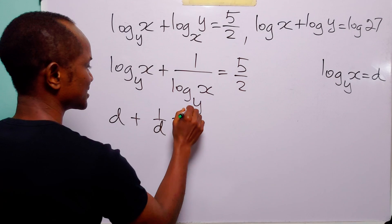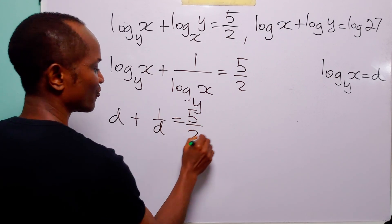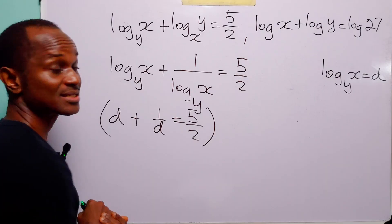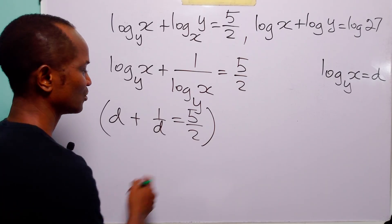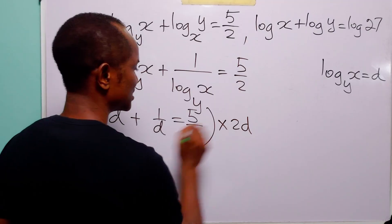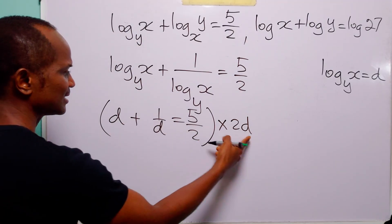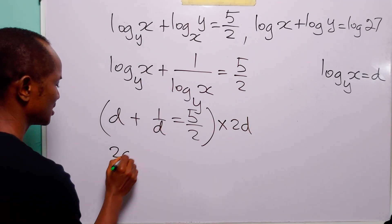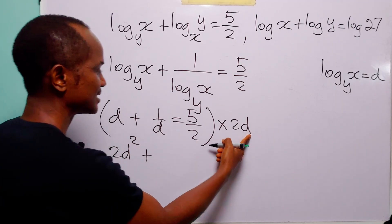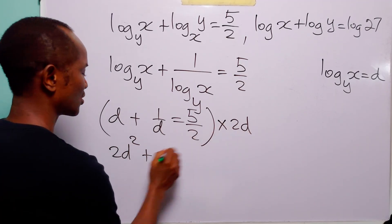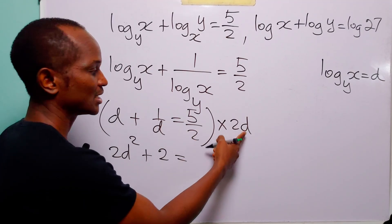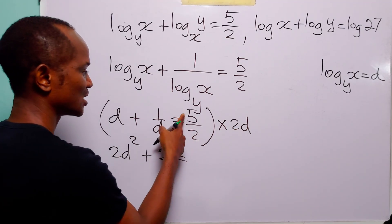Let us further simplify this equation by multiplying through by 2d. So here we have times 2d: d times 2d is 2d squared, and 1 over d times 2d — the d cancels — leaving us with 2.